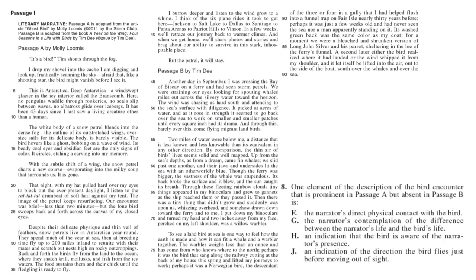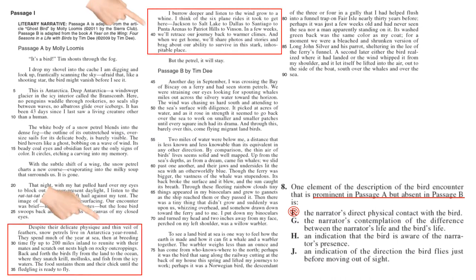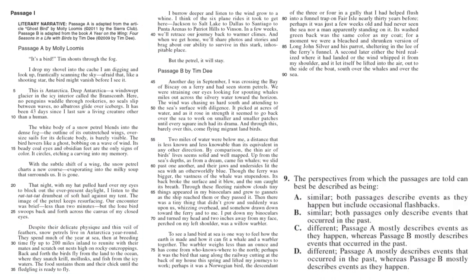Number eight: one element of the description of the bird encounter that is prominent in A but absent in B. Process of elimination: the narrator's direct physical contact with the bird happened in passage B, not passage A. The narrator's contemplation of differences — we examined that in question one, and that happens in passage A but not passage two, so it's G. We eliminate H because that happens in passage B, and J happens in both passages. The answer is G.